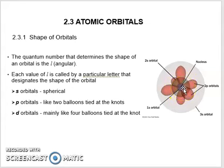Shell 2 has 2s and 2p. This is 2s, the sphere shape, and 2p is the dumbbell shape. We have three orientations of 2p: this is px, and then py.